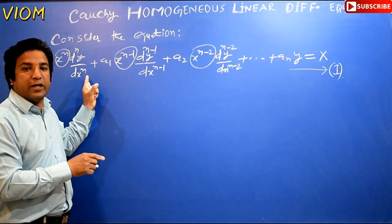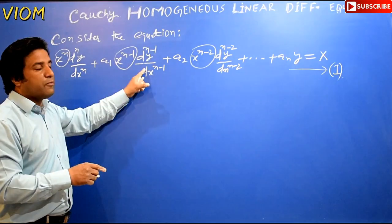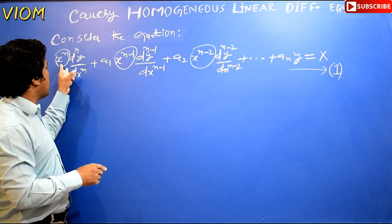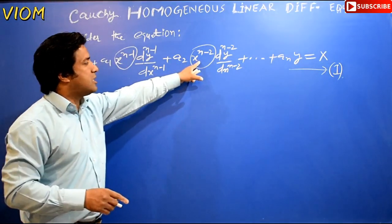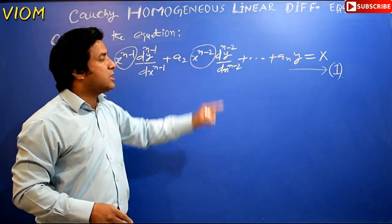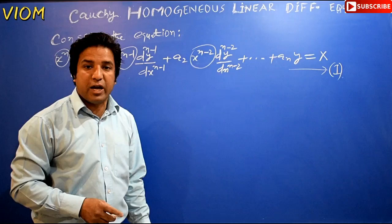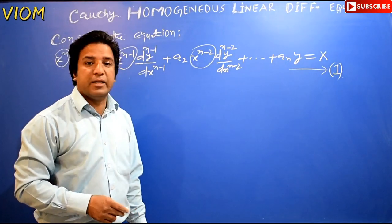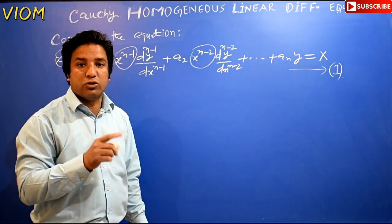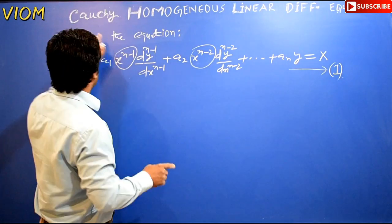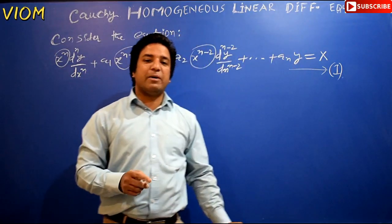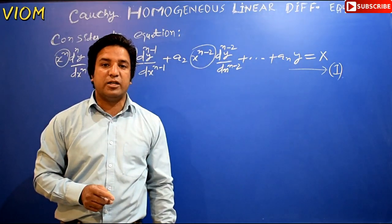But the case is totally different here. We have a differential equation where the coefficients are variables: x raised to the power n, x raised to the power (n-1), x raised to the power (n-2), and so on. This particular pattern was given by Cauchy, and that is why this differential equation is known as Cauchy's Homogeneous Linear Differential Equation — which is today's topic.